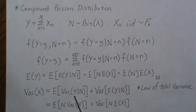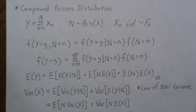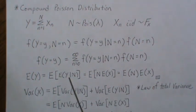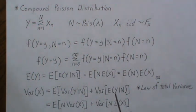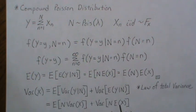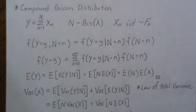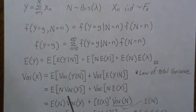For the first term, since Y given N is a sum of N iid random variables with N constant, the variance of Y given N is N times the variance of X. For the second term, the expected value of Y given N is N times the mean of X. When we take the variance of that with respect to N, the mean of X is a constant and comes out squared, leaving the variance of N times the mean of X squared.